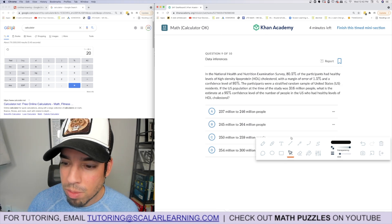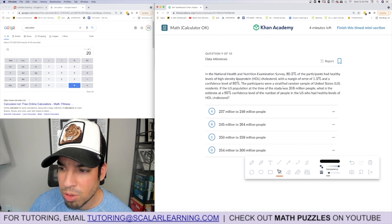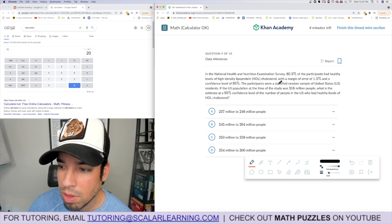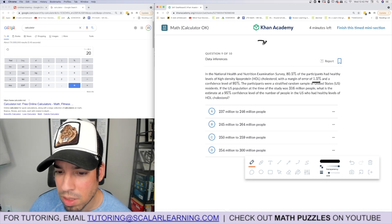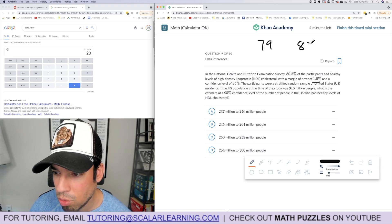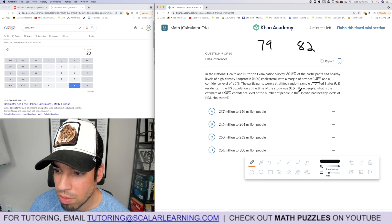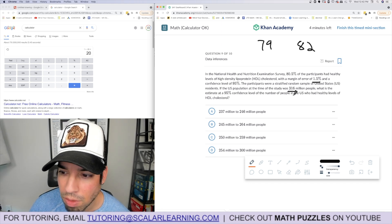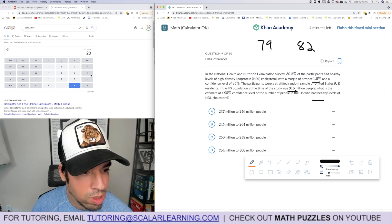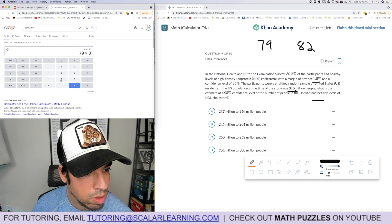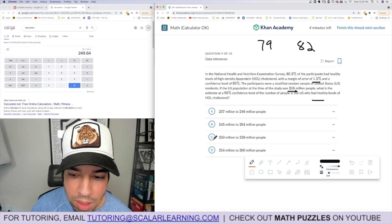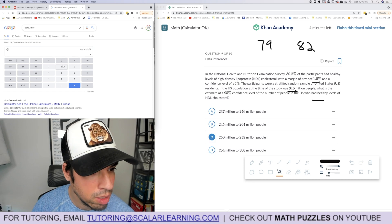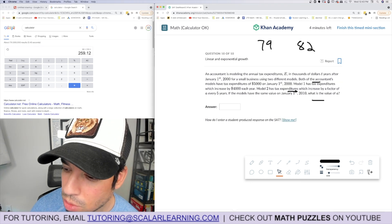The National Nutrition study found 80 percent had a lipoprotein with a margin of error of 1.5. That means it could be as low as 79 or as high as 82, just adding and subtracting the margin of error. What's the 95 percent confidence interval for the population of 316? 79 percent of 316 is 249, which is about 250. It's probably this one. Let me just check: 82 times 316 is 259. Boom, done.